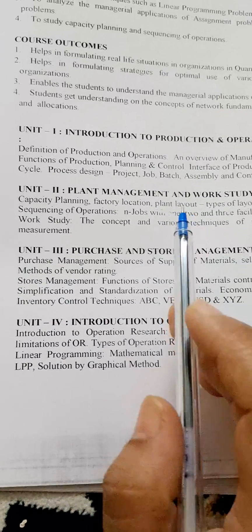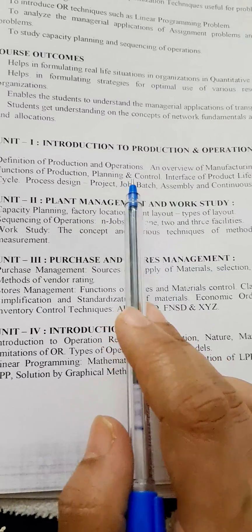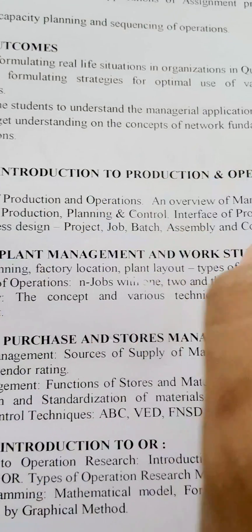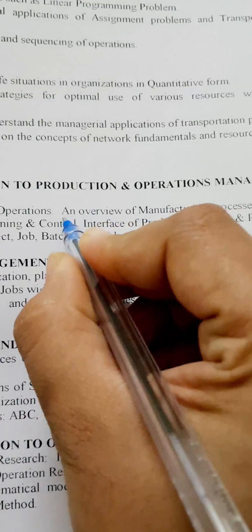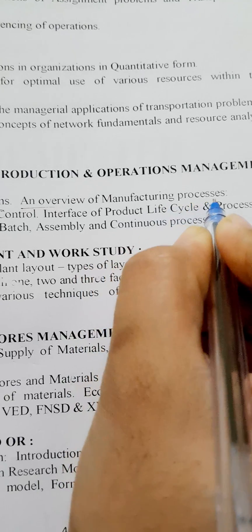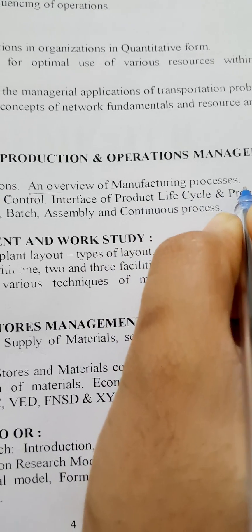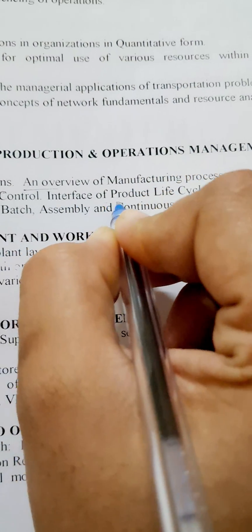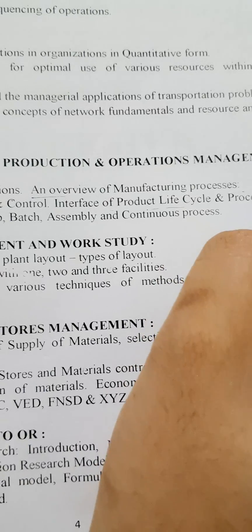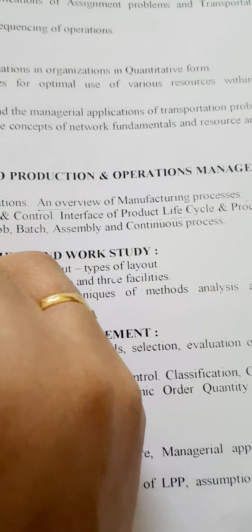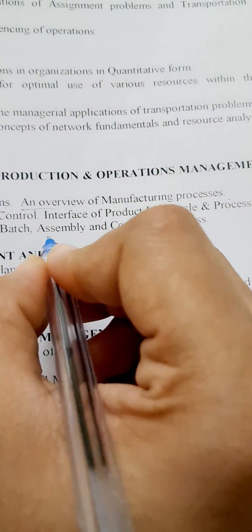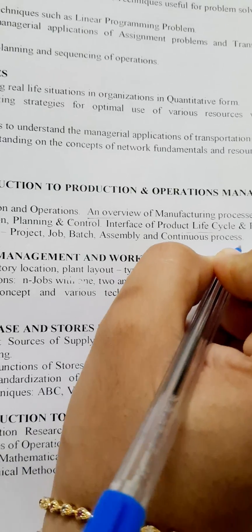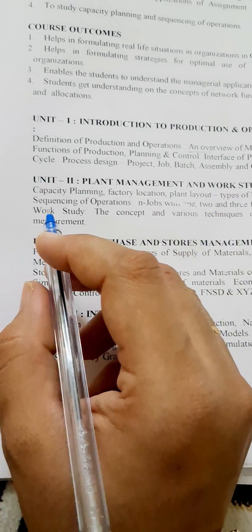We have five units in Management Science. Unit one is Introduction to Production and Operation Management. In this unit, the important questions are: an overview of manufacturing process, interface of product life cycle and product process cycle, and assembly and continuous process.